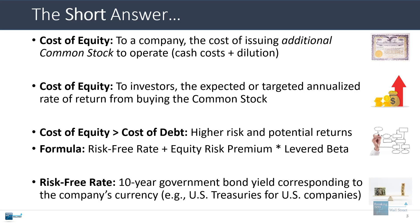The risk-free rate, which we covered in a previous tutorial, is in most cases the 10-year government bond yield that corresponds to the company's currency. If you're working with a U.S. company, you'll look at the 10-year U.S. Treasury bond yield. If you're working with a European company, you'll probably look at the 10-year euro bond yield, or the 10-year government bond yield in the country of the company you're analyzing, as long as the country's bonds are denominated in euros and your company is also using euros.